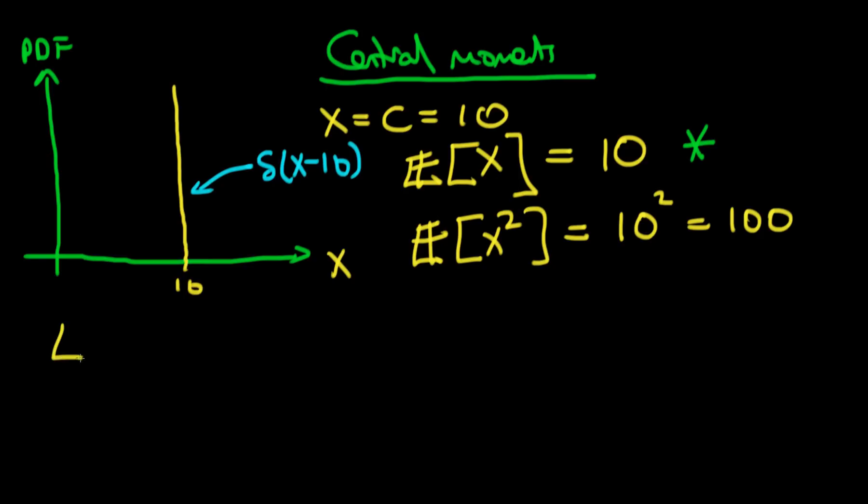And one way we can make it more interesting to tell us a little bit more about the data would be to say what's the expectation of x minus the mean, so 10, all squared. Because what this is doing now is it's telling us what's the average value of the square distance of points away from the mean. So it's telling us something about the spread of the points around the mean. And for this particular case it would actually turn out because x is always equal to 10 that this would actually be equal to 0.